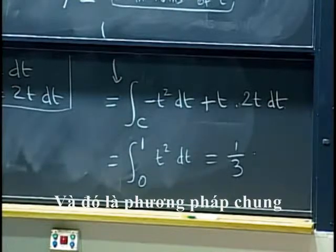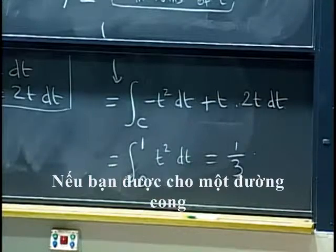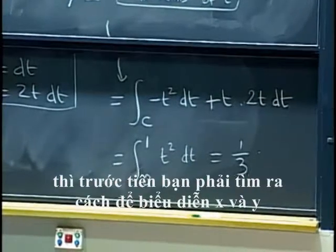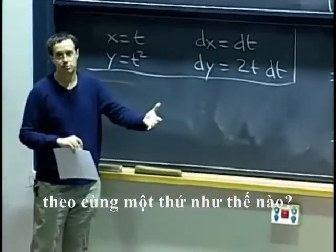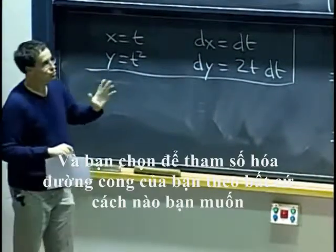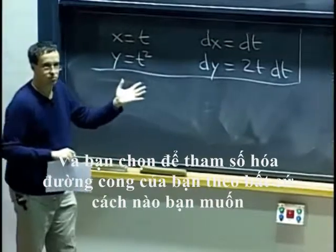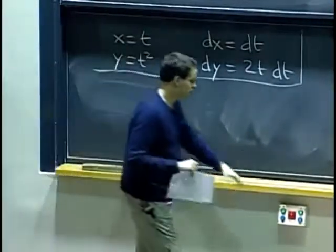And that is the general method. So if you are given a curve, then you first have to figure out how do you express x and y in terms of the same thing. And you get to choose, in general, what parameter we use. You choose to parametralize your curve in whatever way you want.